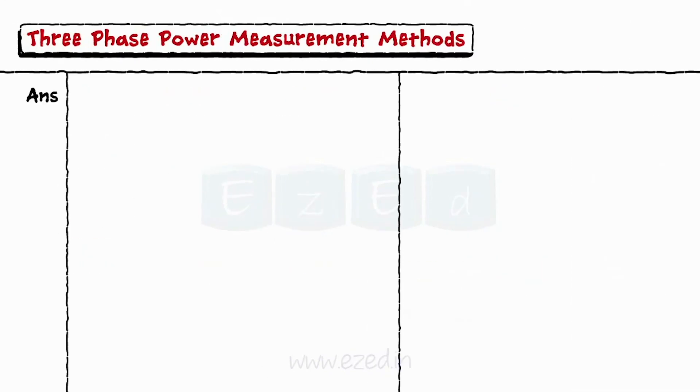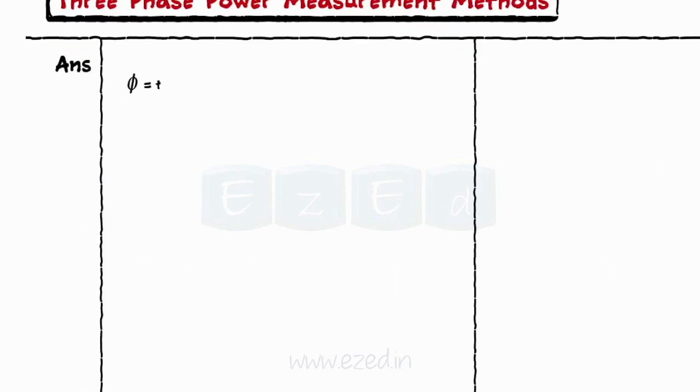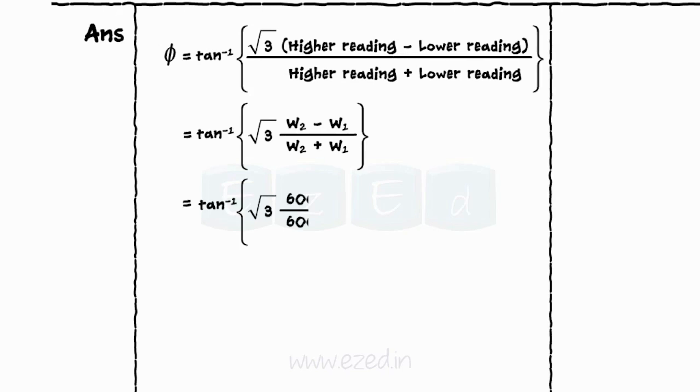From the two wattmeter methods, the phase angle is calculated as phi equals tan inverse of root 3 into higher reading minus lower reading upon higher reading plus lower reading. Substituting the values of wattmeter readings, we get phi equal to 19.106 degrees.